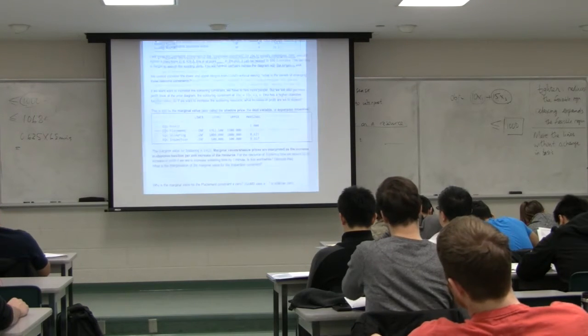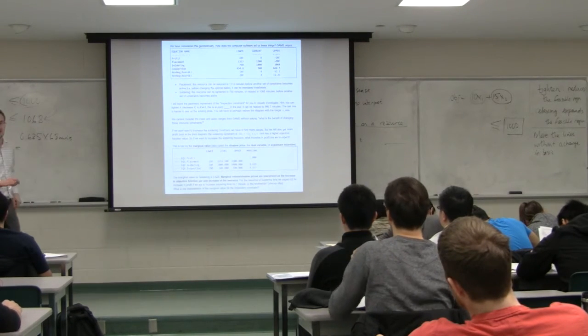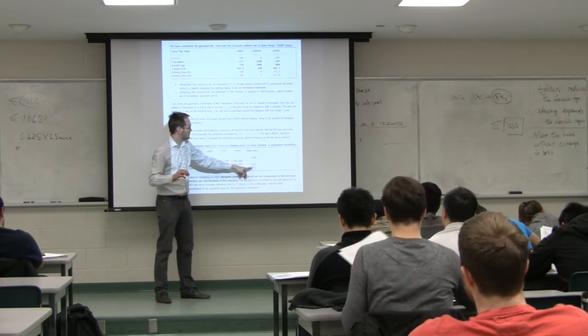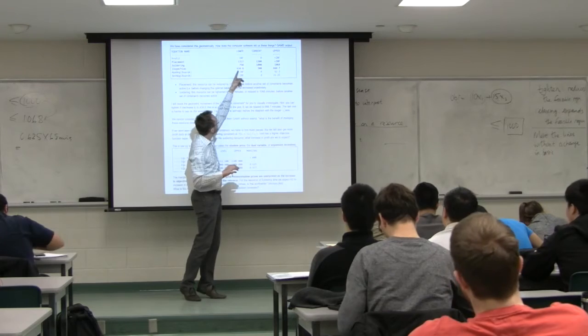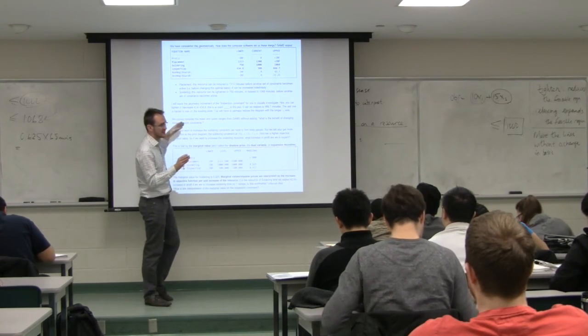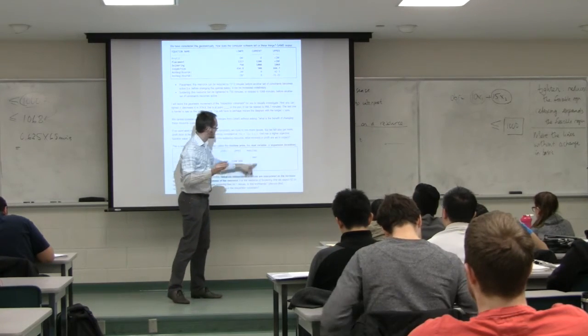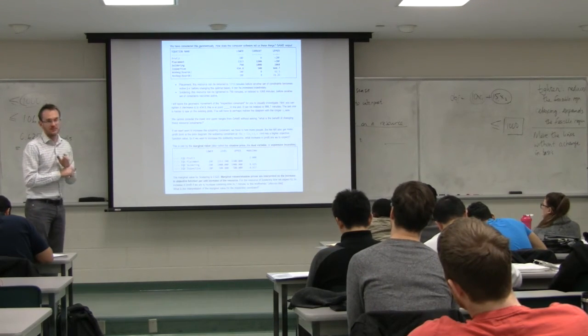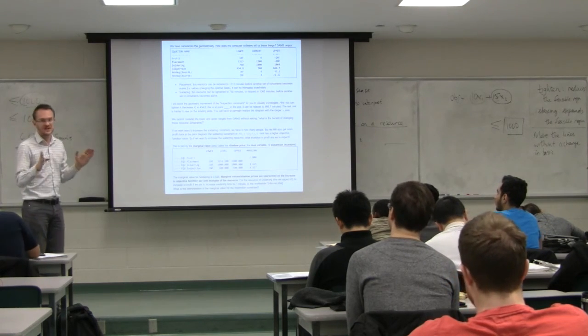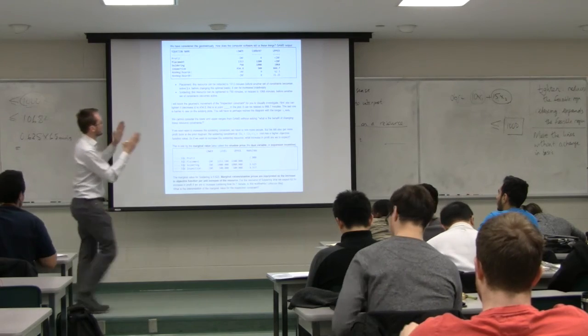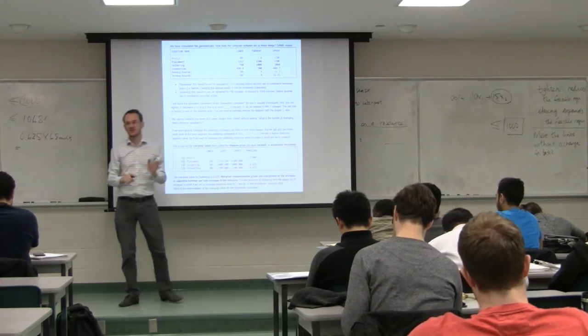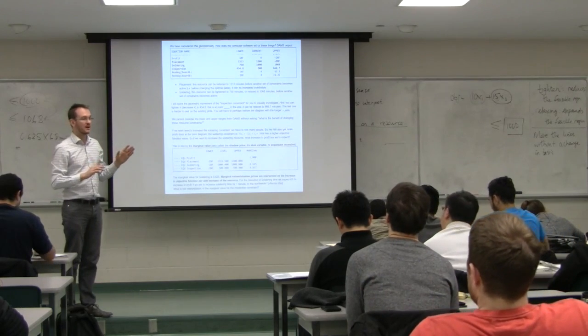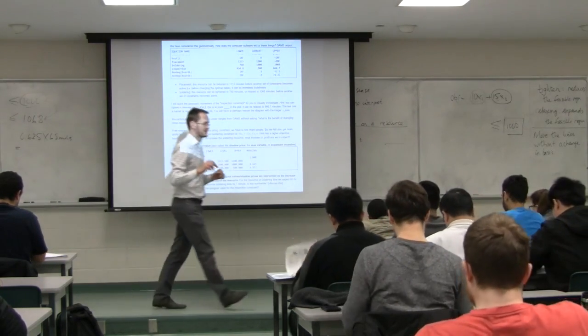The key result for today is you've got to read both tables simultaneously. These ranges tell you the effect of the marginal variable. If you go outside that range, let's take soldering between 750 and 1,068, outside of that range, this number of 0.625 is meaningless. The 0.625 can only make sense within the range reported. We're going to get plenty of practice in the next class and in the assignments.